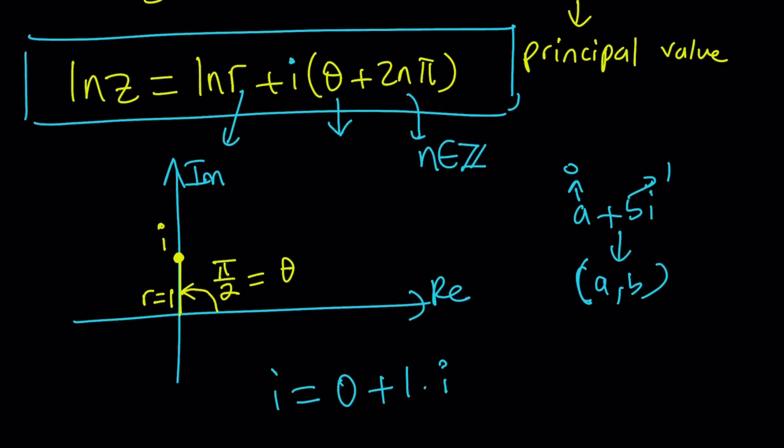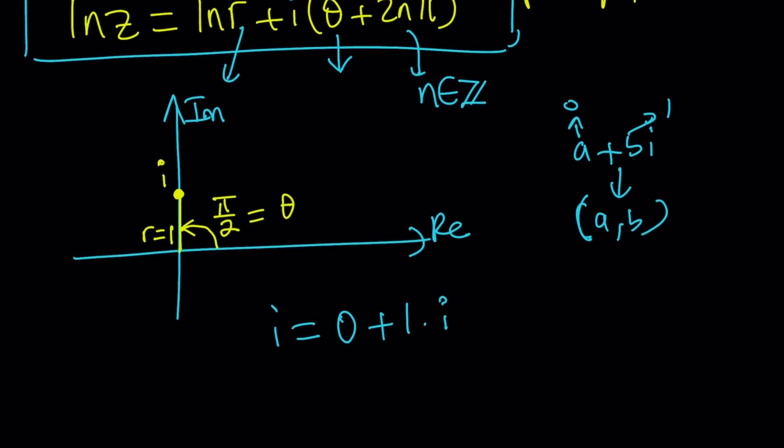So I got two values. I can just plug them in. Let's go ahead and do it. ln i is going to be ln r, which is ln 1, plus i times theta, which is π over 2, plus 2nπ.